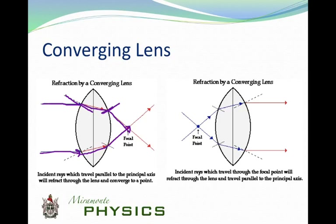If the light is starting at the focal point, it's going to come towards the lens, refract through the lens, and go out parallel. So from the focal point into the lens, out parallel — there's that symmetry. In parallel, out to the focal point. In from the focal point, out parallel. We'll use these ideas to make ray diagrams for both converging and diverging lenses.